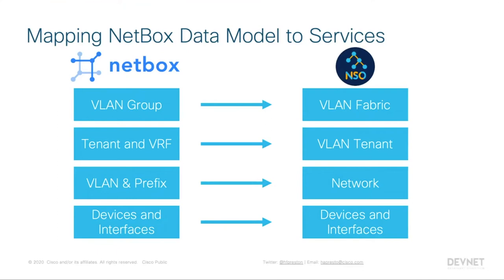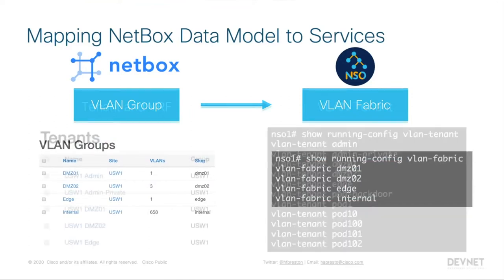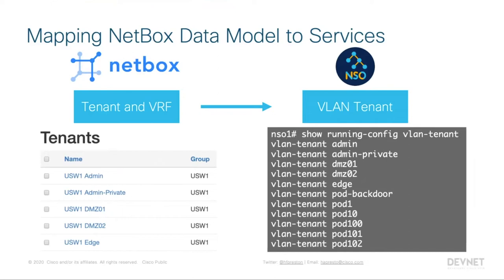Each network inside a VLAN tenant is made up of a VLAN and its matching prefix. Devices and interfaces map pretty easily together. On the slide comparing the two tools, we can see VLAN groups for one of our data centers — DMZ01, 02, edge, and internal — and we have the exact same VLAN fabrics configured inside NSO. Details about trunk links all get pulled out of NetBox. Moving to VLAN tenants, the tenant representation from NetBox is directly mapped to the VLAN tenant representation in Cisco NSO.